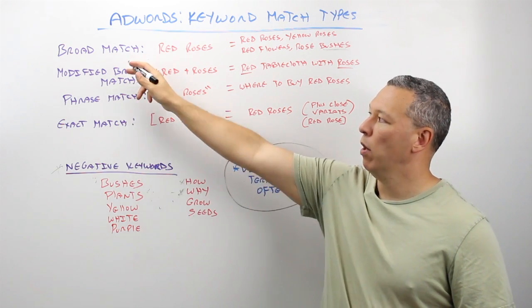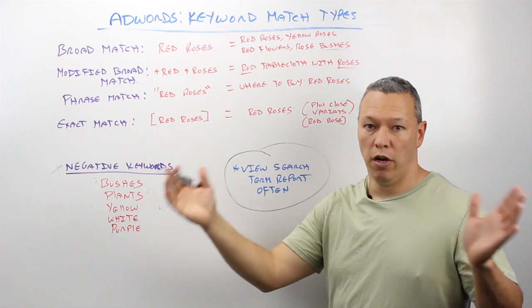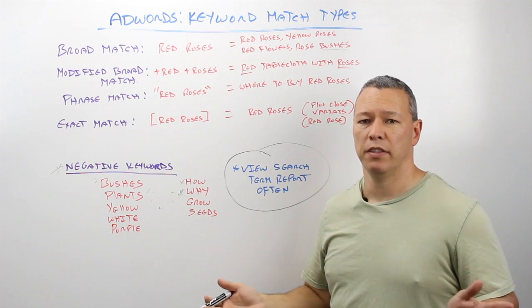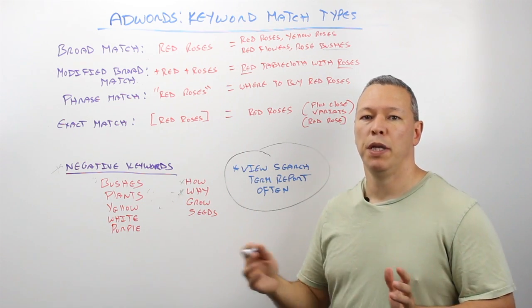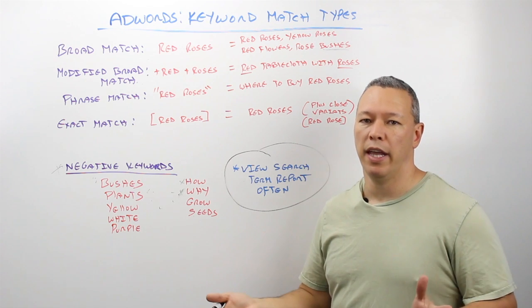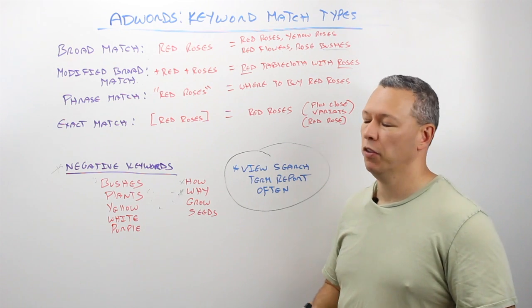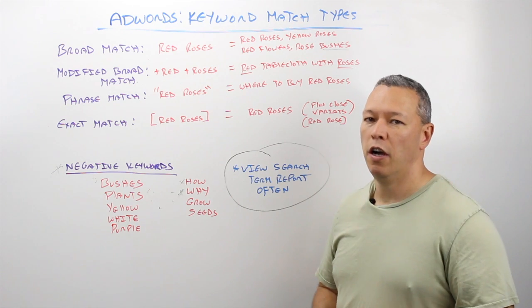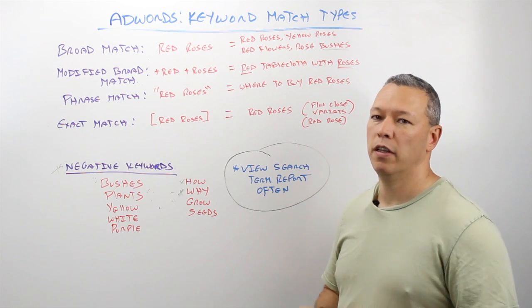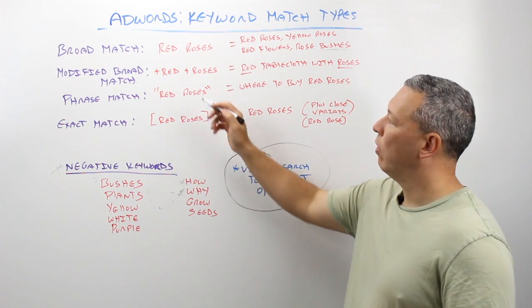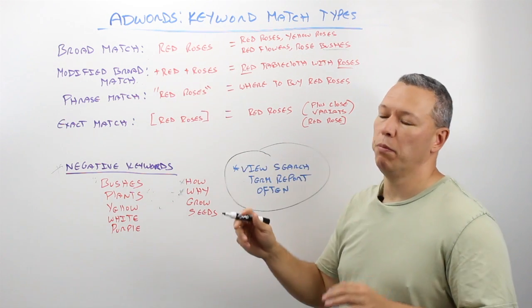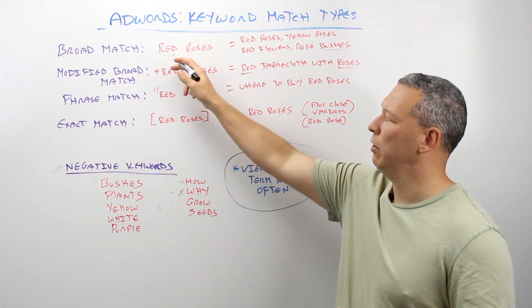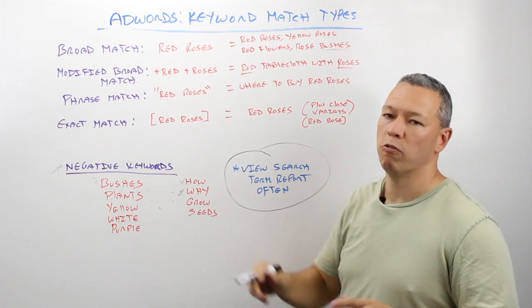Broad match is the most broad, and that gives Google the biggest license to show your ad to people who they think your ad might be relevant for. You have to be careful with that because sometimes they overreach on how relevant they think your ad is. We're going to use an example — if you're a florist, we're going to use the keyword 'red roses.'